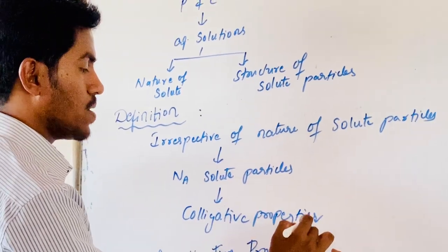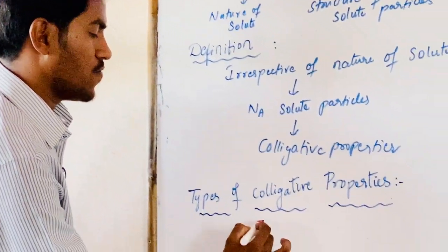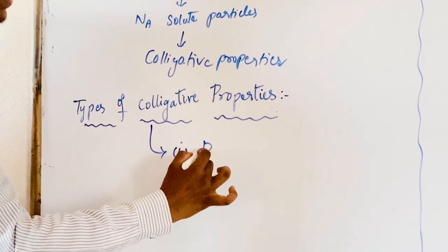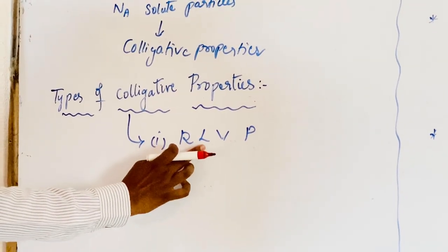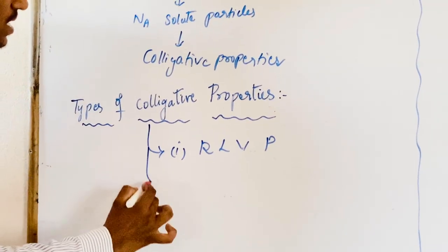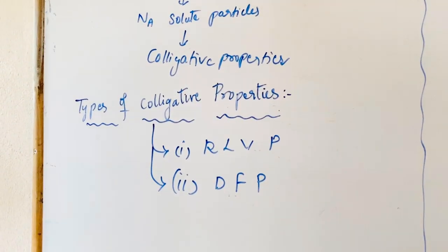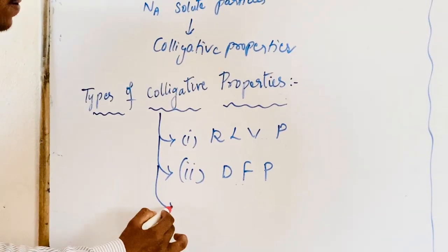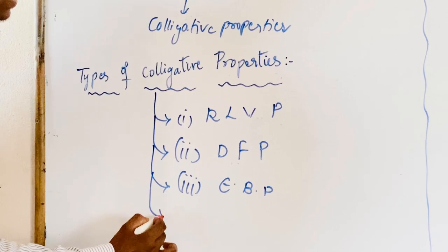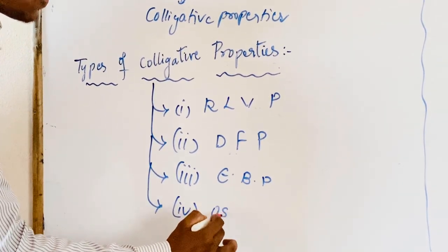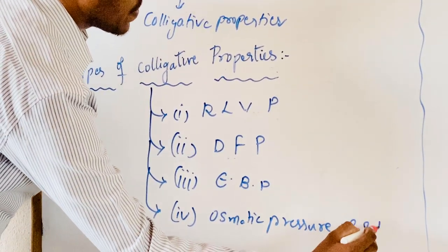Now, Colligative Properties are classified into 4 types. Those are RLVP: Relative Lowering of Vapor Pressure, Depression of Freezing Point, Elevation of Boiling Point, and Osmotic Pressure of Solution.